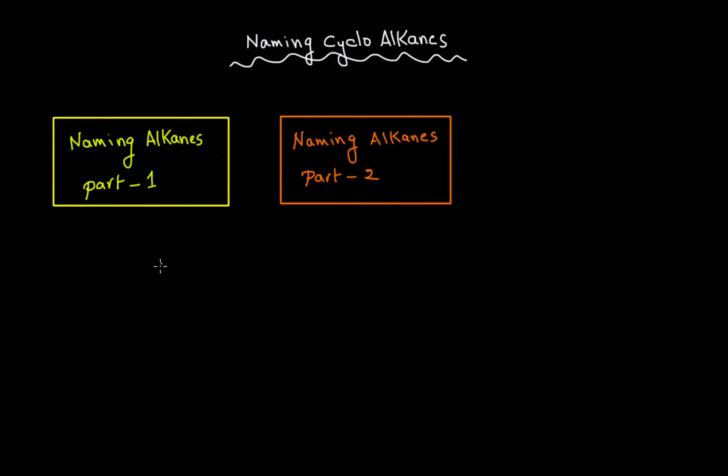In my previous video I have explained that the name of an alkane is constituted from three parts: a prefix, plus parent, and then the suffix. Prefix is for the substituent part, the parent is where we choose the longest chain, and the suffix is for functional groups.